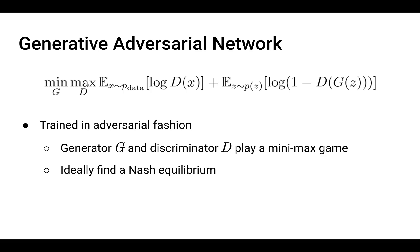Instead, this model is trained in an adversarial fashion, where you have two networks — a generator and a discriminator — playing a minimax game against each other. The generator generates fake images, the discriminator has to distinguish whether an image is fake or real, and if the setup is well-balanced, they will ideally find a Nash Equilibrium, though that's a whole other story.